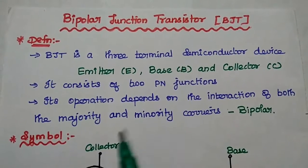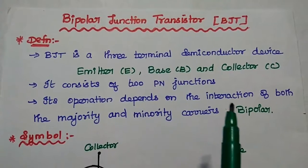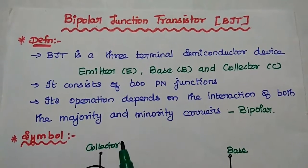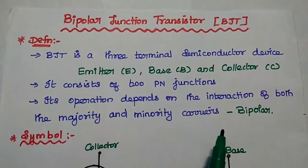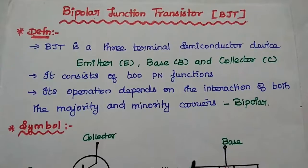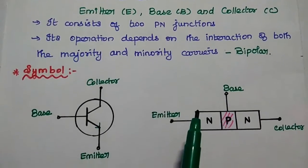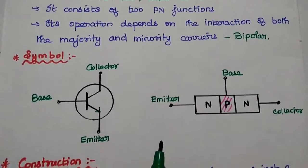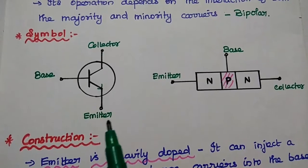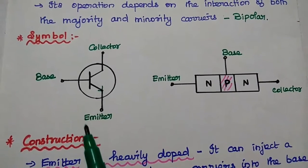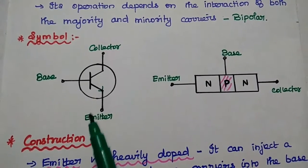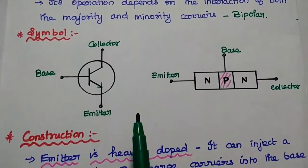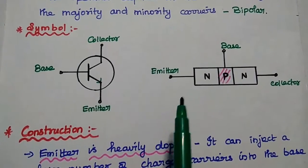That means its operation depends on the interaction of both the majority and minority carriers. Hence, it is called as bipolar transistor. Next, the symbol of transistor. We can simply represent the transistor like this. There are two types of transistors available.